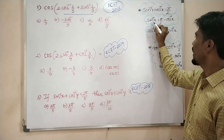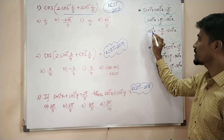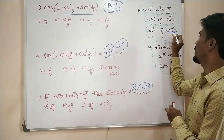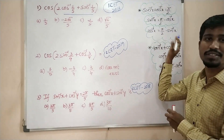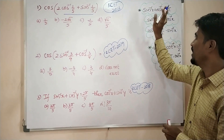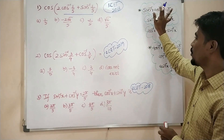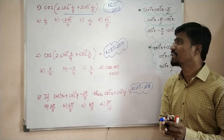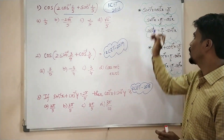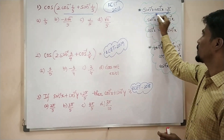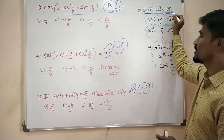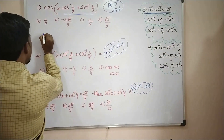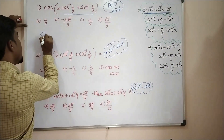sin⁻¹x can be written as π/2 − cos⁻¹x, and cos⁻¹x can be written as π/2 − sin⁻¹x. This is a very very important property. sin⁻¹x + cos⁻¹x = π/2. So it is very simple — we apply this method.